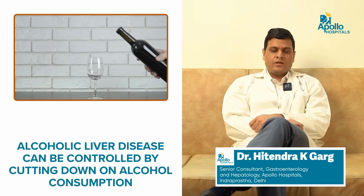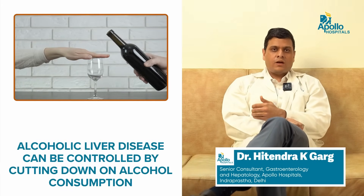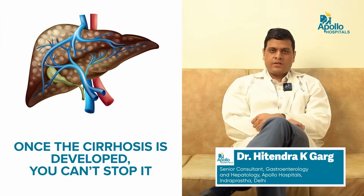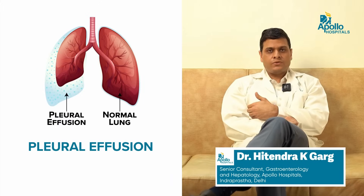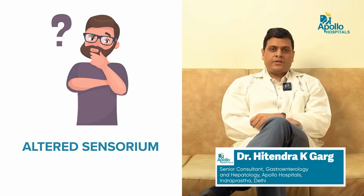Regarding treatment, the most common cause of liver cirrhosis in India is alcoholic liver disease. If we stop alcohol, we can prevent alcoholic liver disease, but once cirrhosis develops, stopping alcohol cannot reverse it. However, stopping alcohol does prevent further decompensation — meaning preventing development of ascites, jaundice, pleural effusion, altered sensorium, and liver tumors.